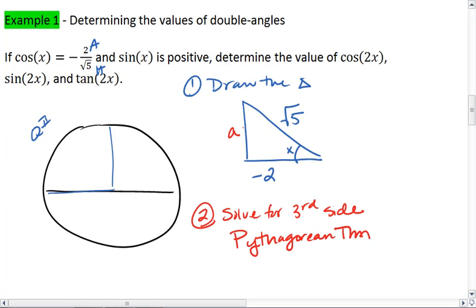So for this third side, we know that a squared plus negative 2 squared is going to be equal to the root of 5 squared. We get a squared plus 4 equals 5. a squared equals 1. a equals 1.